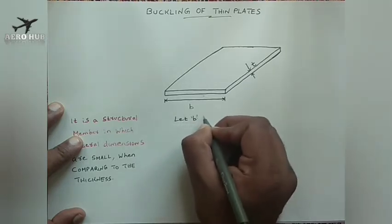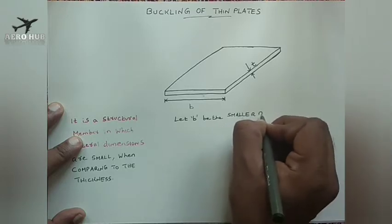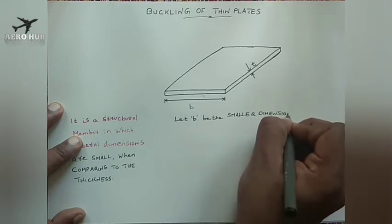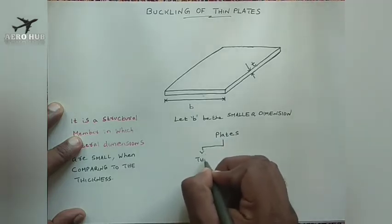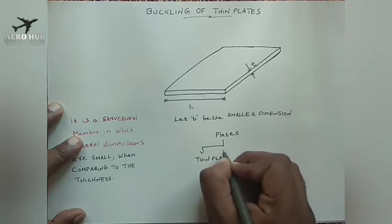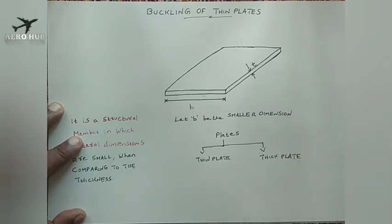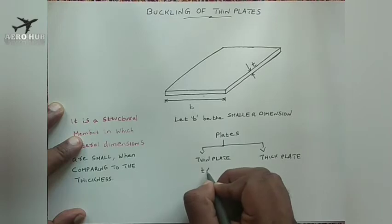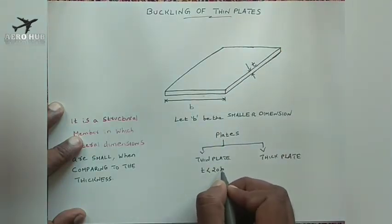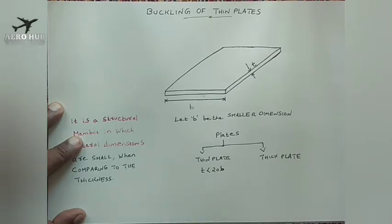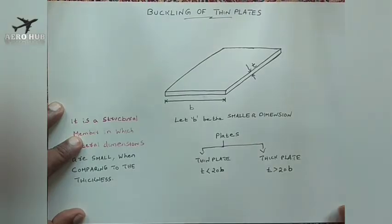Let B be the smaller dimension. Plate can be classified as thin plate and thick plate. When the thickness is smaller than 20 times B — where B is the smaller dimension — it is called a thin plate. When the thickness is larger than 20 times B, this is a thick plate.